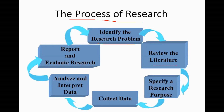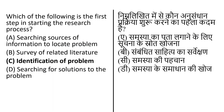The steps are: identify the research problem, review the literature, specify a research purpose, collect the data, analyze and interpret the data, and finally report and evaluate the research. So the correct answer is option C — identification of the problem is the first step in starting the research process.